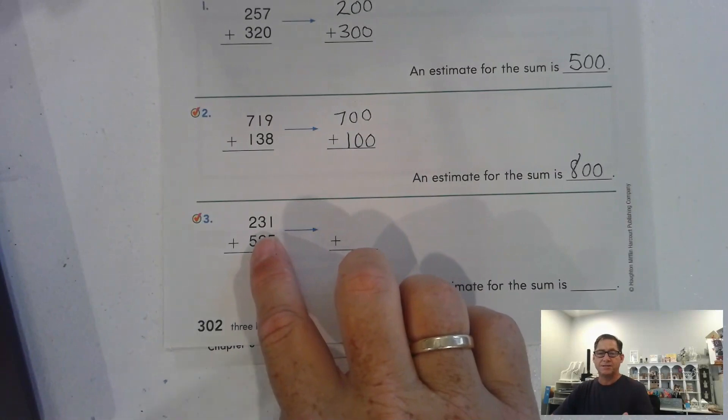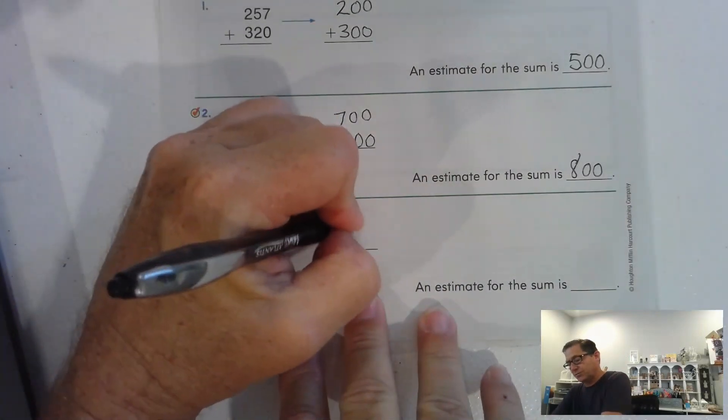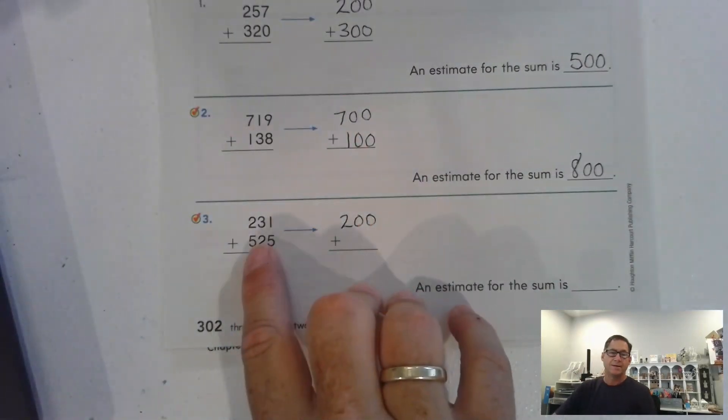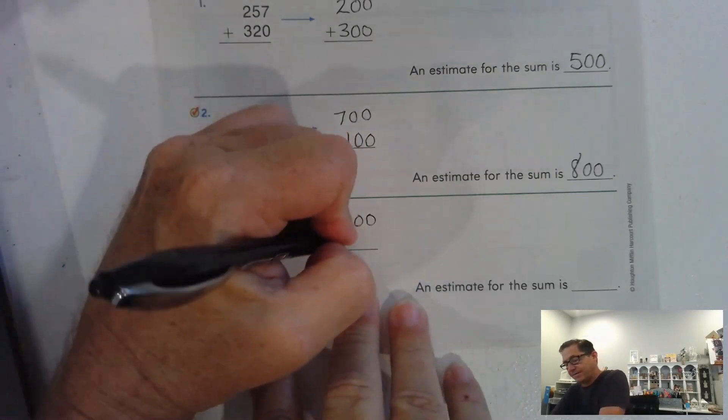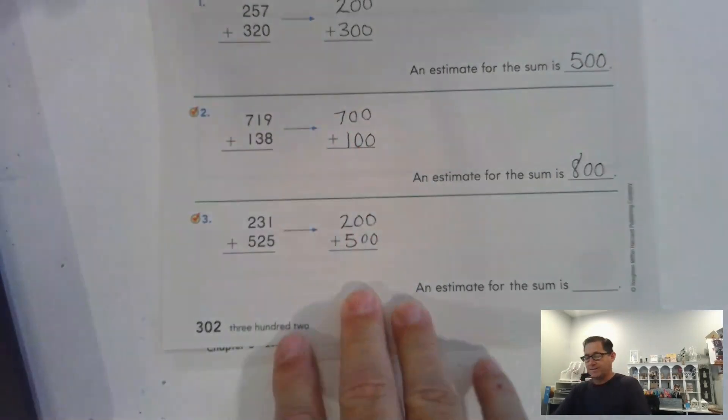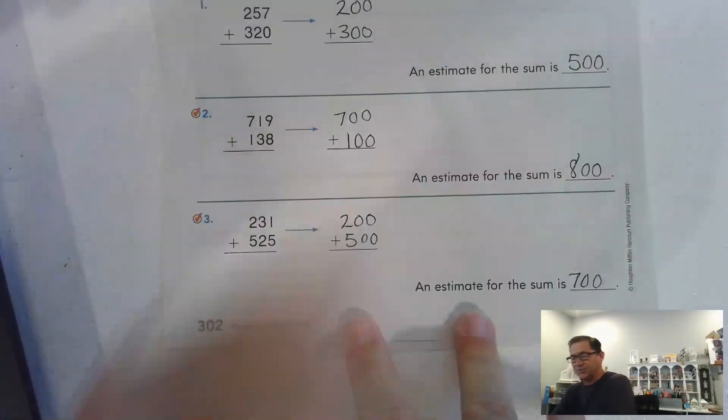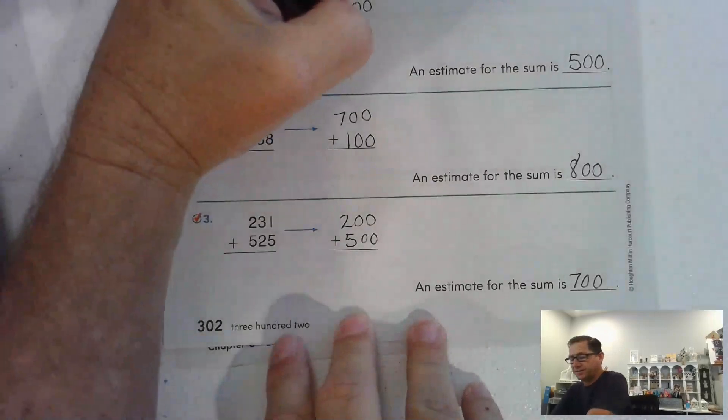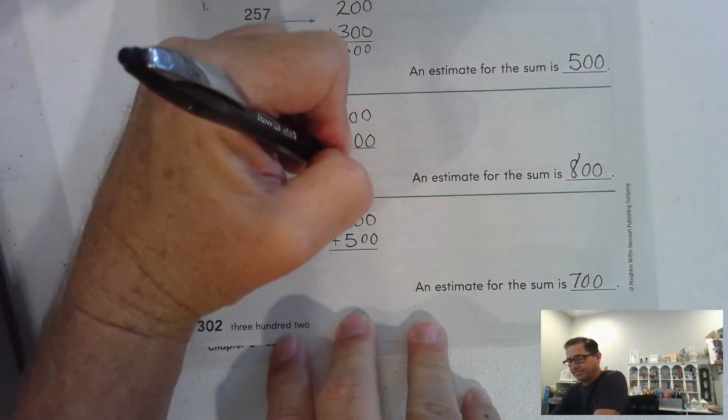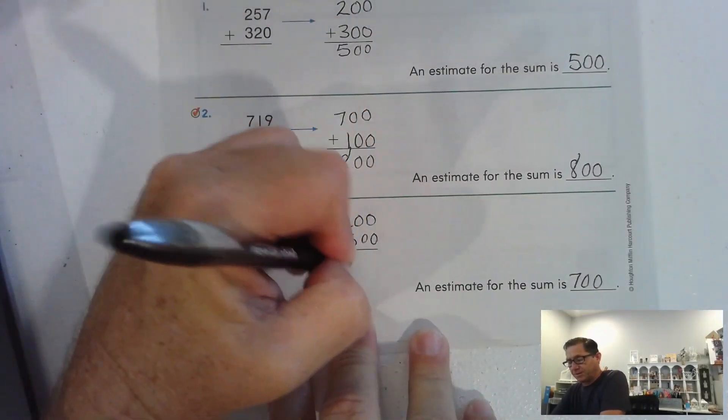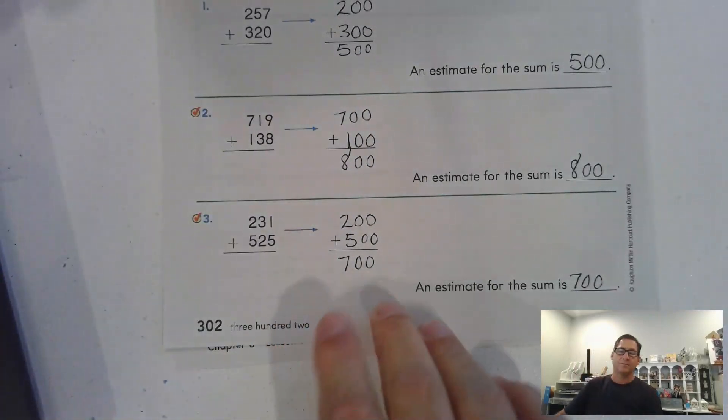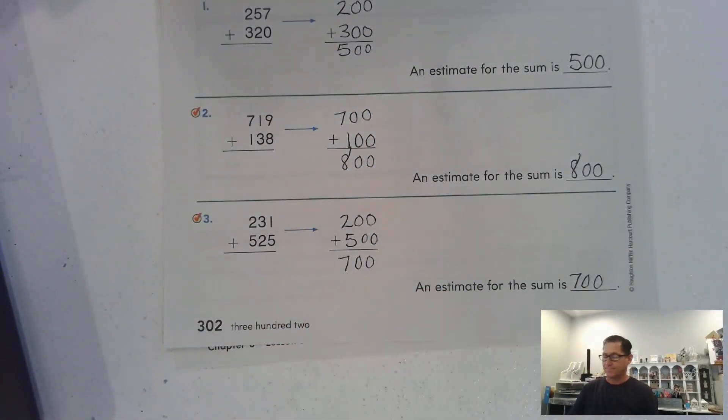231. What digit is in the hundreds place? Two. So, 200. 525. What digit is in the hundreds place? 500. So, 500. So, what is that estimate? 700. I guess I should have written the answers underneath instead of just on the right hand side. So, 500 plus 200 is 700.